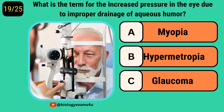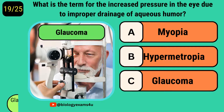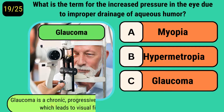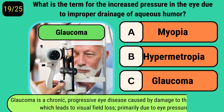What is the term for the increased pressure in the eye due to improper drainage of aqueous humor? It is called glaucoma, a chronic progressive eye disease caused by damage to the optic nerve which leads to visual field loss, primarily due to eye pressure.